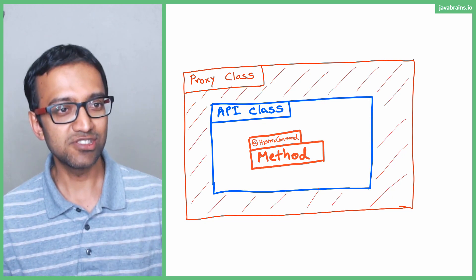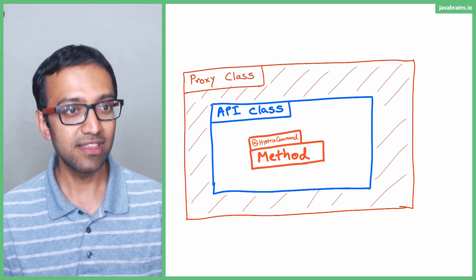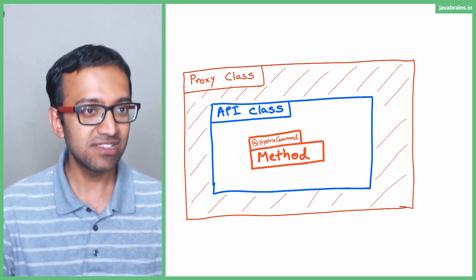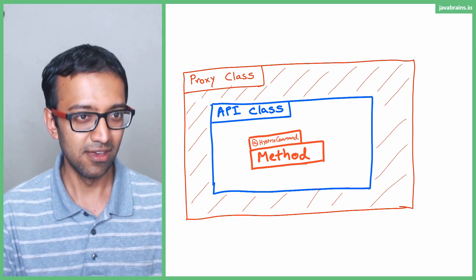So when somebody is saying hey, give me an instance of that class, what they're going to get back is not the instance of the class itself. They're going to get back an instance of this proxy class that Hystrix has created and wrapped around it.